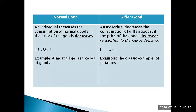On the other extreme, we have giffen goods — an individual decreases the consumption of giffen goods if the price of those goods decreases. This is essentially an exception to the law of demand. Consider a scenario where you're a toy collector collecting two different types of toys: one is a cheaper, poor-quality version, and the other is of higher quality and more costly. If the price of the cheaper toy falls, instead of buying more of it, you cut down the consumption of the cheaper toy altogether.